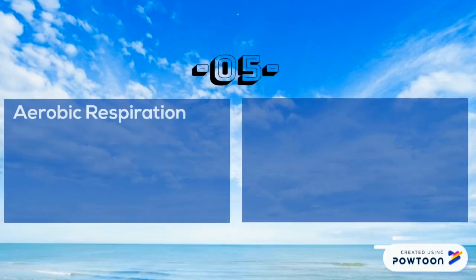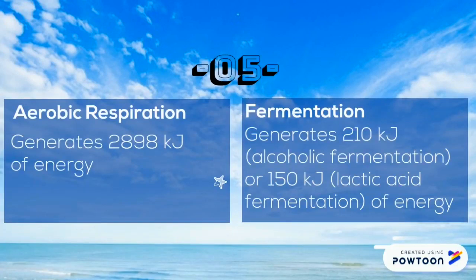The fifth difference: in aerobic respiration, one molecule of glucose generates 2,898 kilojoules of energy. In fermentation, one molecule of glucose generates 210 kilojoules for alcoholic fermentation or 150 kilojoules for lactic acid fermentation.